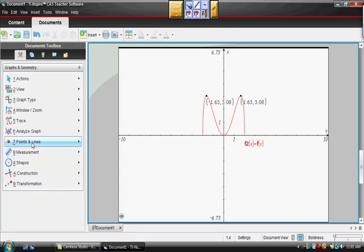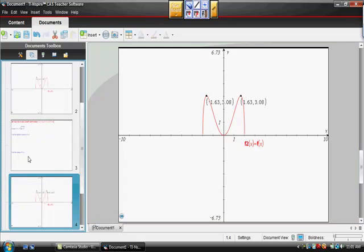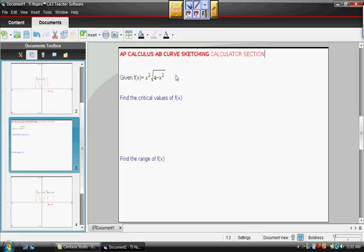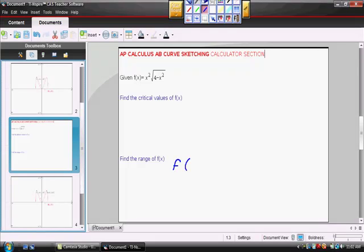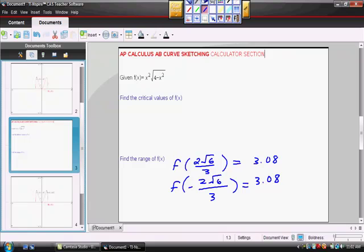Going back to our test, that's what you have to write in. Remember, you can't say I used my calculator there. You have to say f(two square roots of six over three) equals 3.08. That's a local max. f(negative two square roots six over three) is also equal to 3.08. Those are critical values. And f(0) equals zero. So our range inclusively is on the interval zero to 3.08. And it's on a closed interval because these heights exist.